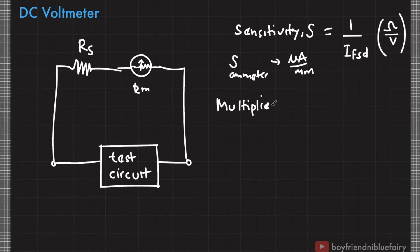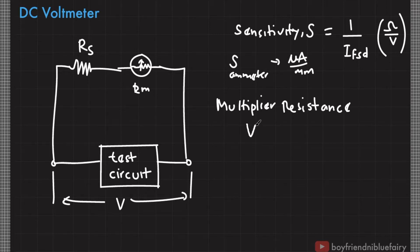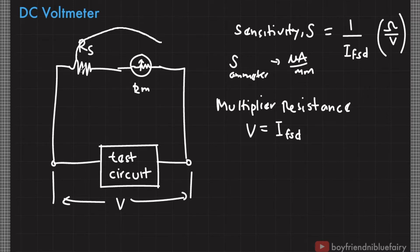Now to get an expression for the multiplier resistance — notice that if the voltage from this point to this point is V, and if I apply the loop rule, then the potential rise given by the test circuit must equal the potential drop in these components. The potential drop equals the current through the galvanometer — assumed to be the full scale deflection current — times the total resistance. The equivalent resistance of R_s and R_m is simply their sum because they are in series.